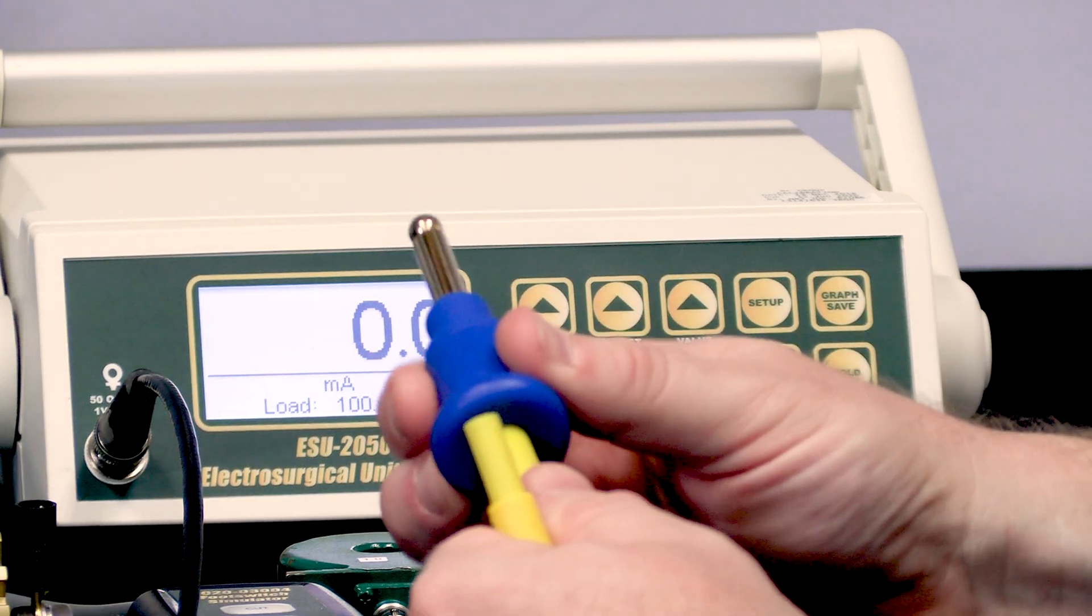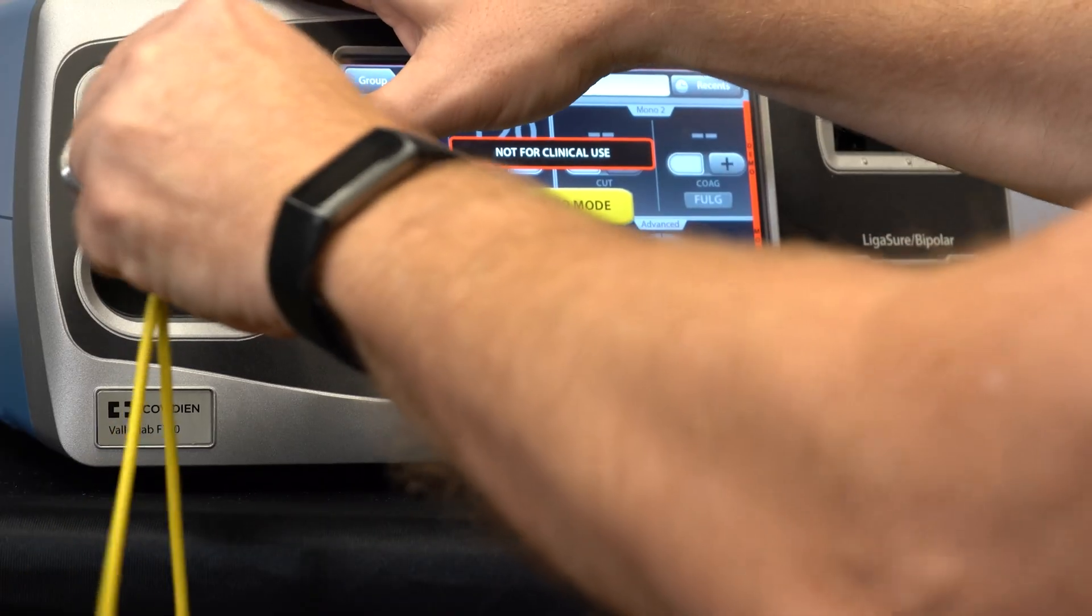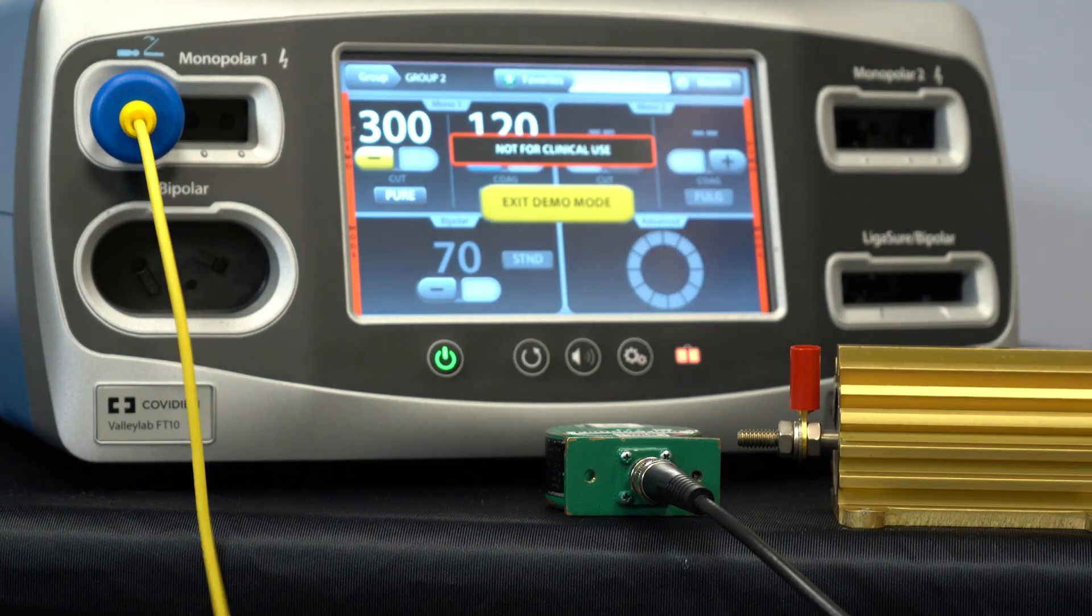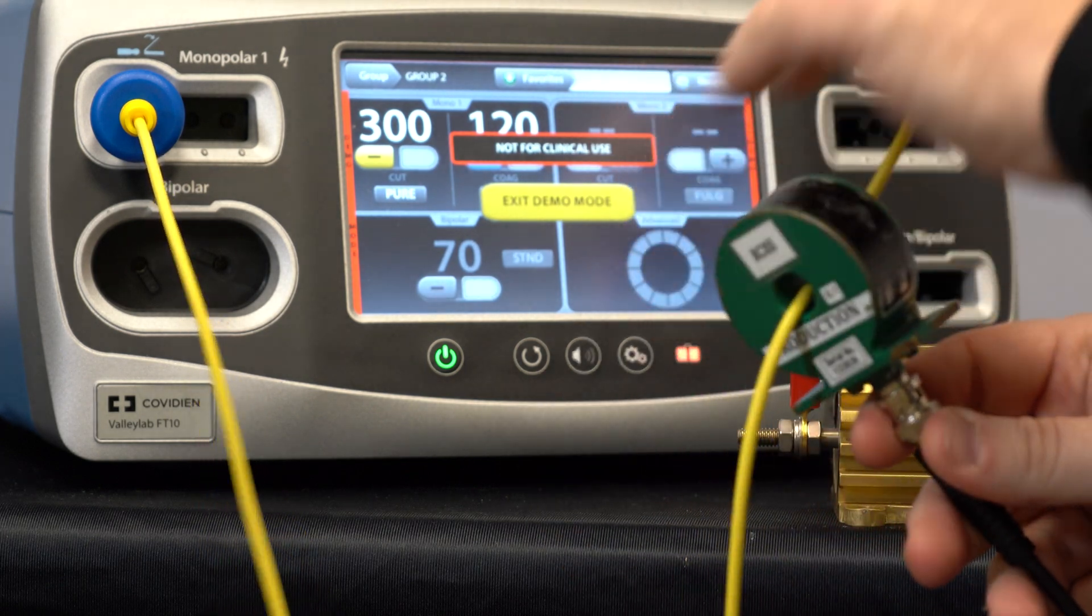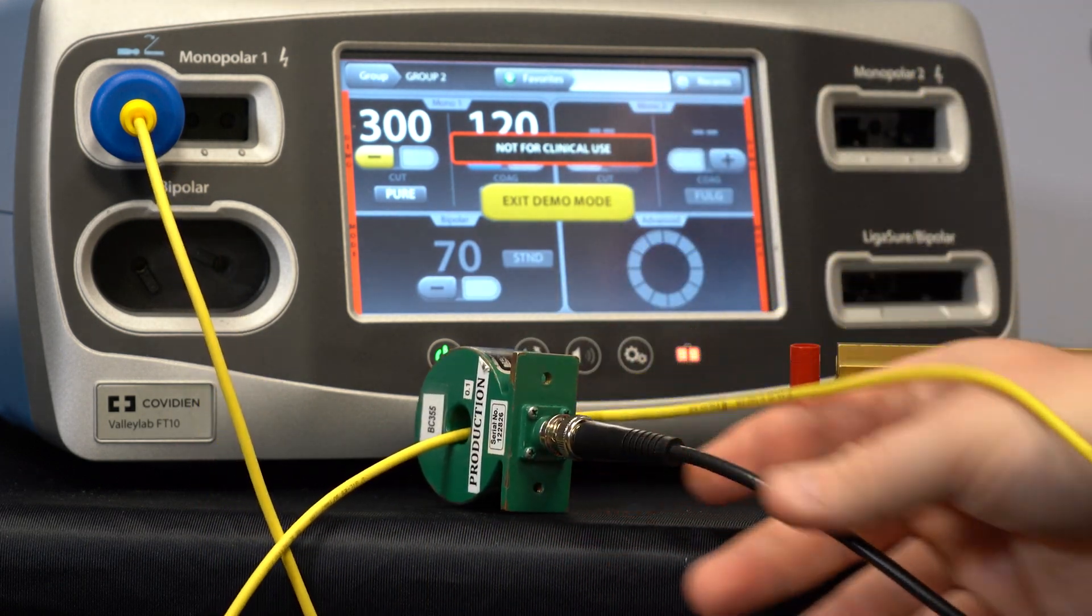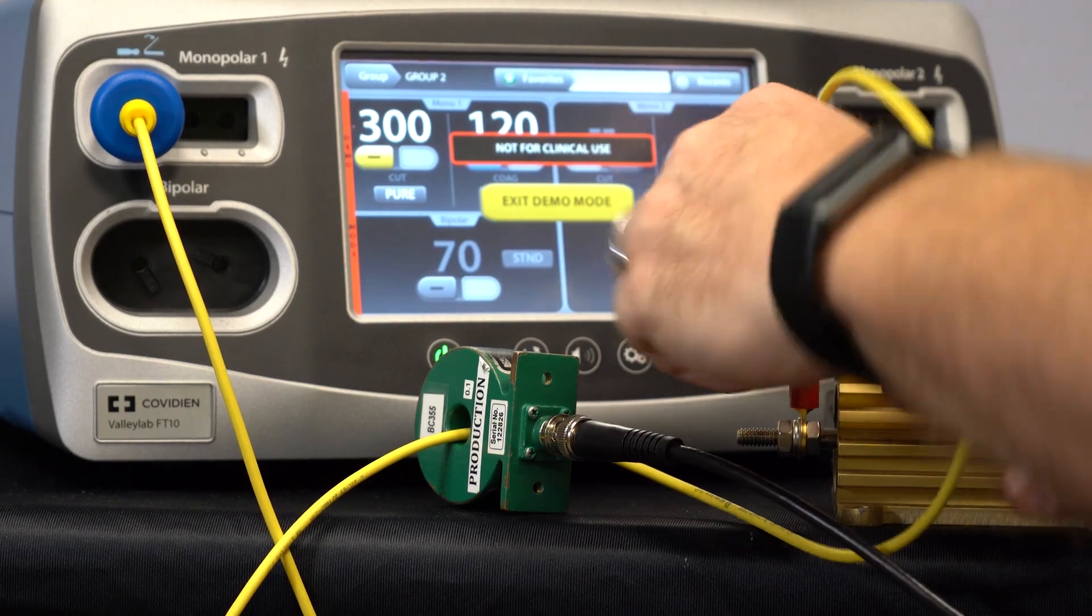We're going to take our active lead and plug that into the monopolar 1 port using that footswitch port adapter. Now I'm going to take the output, other end of the output cable, and go through the current transformer and into my load.